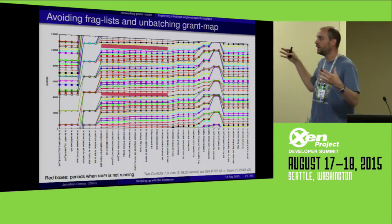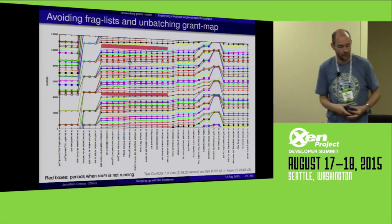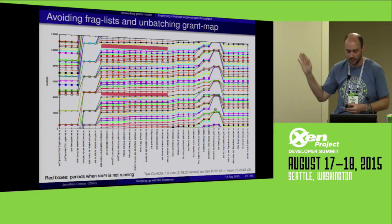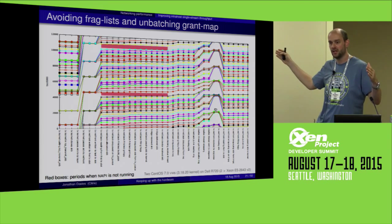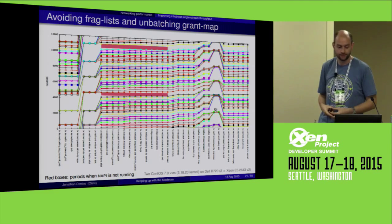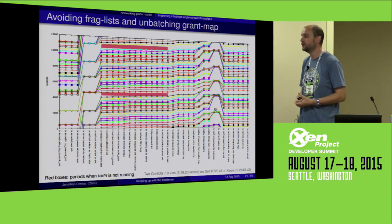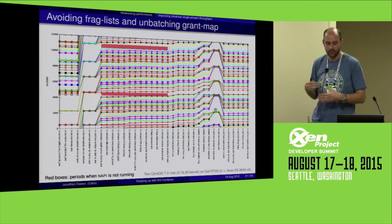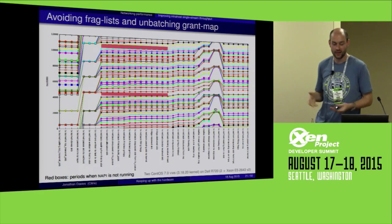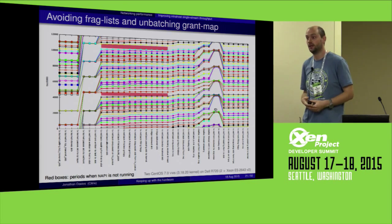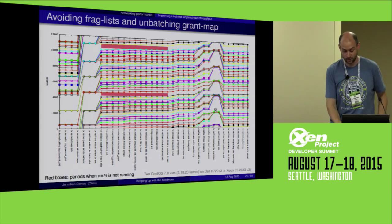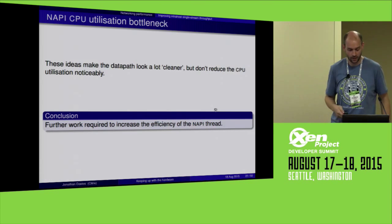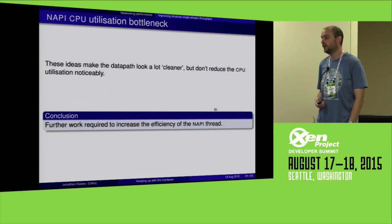With those prototypes applied, the whole shape of the graph looks cleaner and easier to follow. End-to-end latency is now more predictable because we got rid of the batching. But unfortunately, looking at the red periods where NAPI is not doing anything, we haven't really made much more red appear. So whilst these seem like good ideas to improve efficiency, they haven't really done much. Further work is required to increase the efficiency of the NAPI thread.